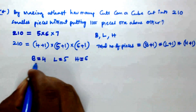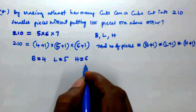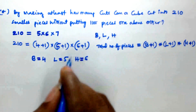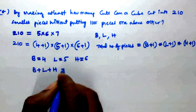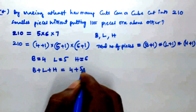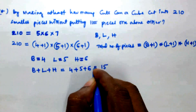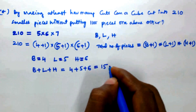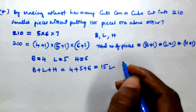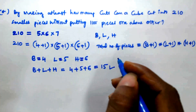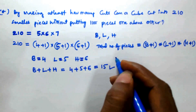So 4 gives the cuts along the breadth, 5 gives the cuts along the length, and 6 gives the cuts along the height. The total number of cuts is b + l + h = 4 + 5 + 6 = 15. By making at least 15 cuts, we can cut a cube into 210 smaller pieces. I hope you got this. Thank you for watching — please leave a comment if you have any doubt, and please subscribe to my channel.